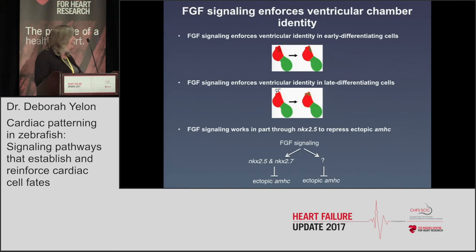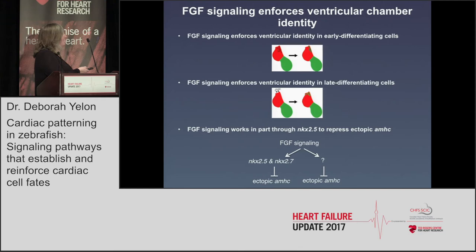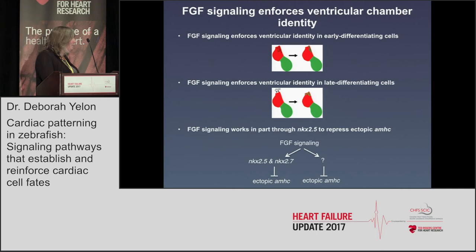Putting all of this together, we think that FGF signaling plays a really important role in enforcing ventricular identities — both in early and late differentiating portions of the ventricle — and that it works at least in part through NKX genes to repress atrial gene expression in the ventricle, promote ventricular gene expression, and keep those identities locked in. There must yet be other factors that also contribute downstream of FGF signaling, and we're curious to find those going forward.